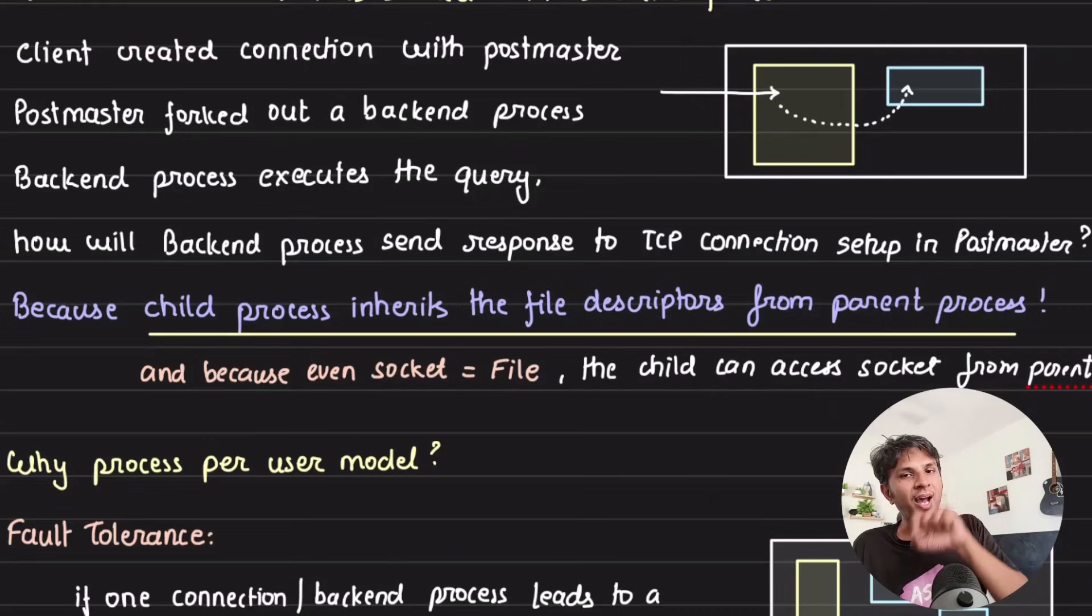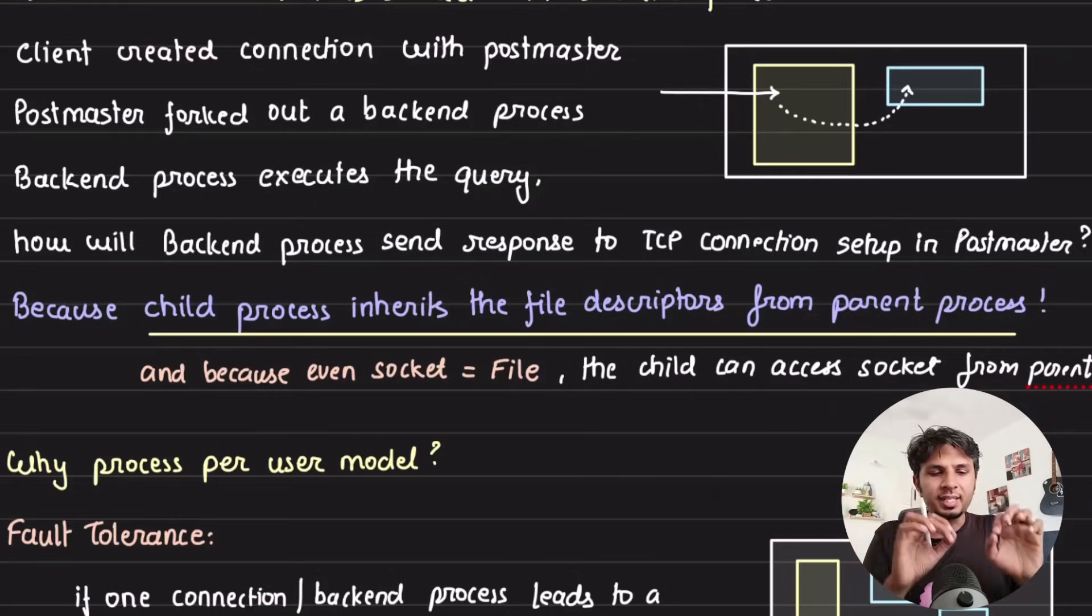So because it gets the file descriptor of the parent, it can fire the system call using that file descriptor - read, write, close, whatever it wants to do on that. It can fire that. But so does parent can do also, like parent can also fire the query or basically do the system call.